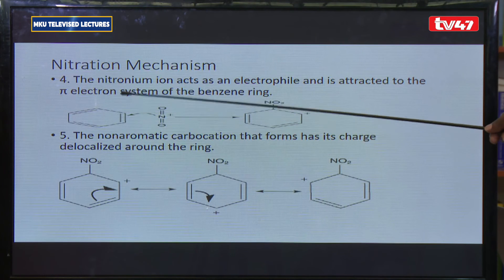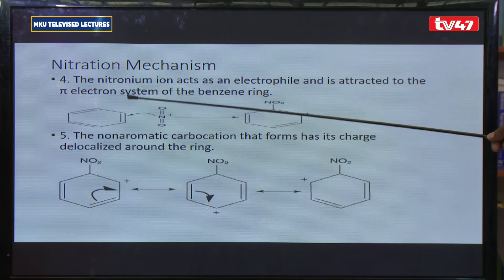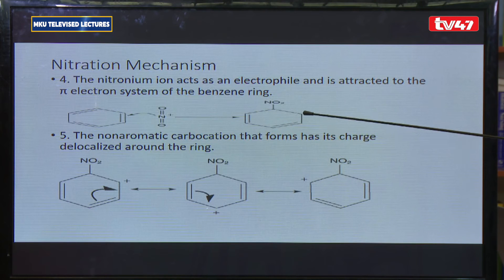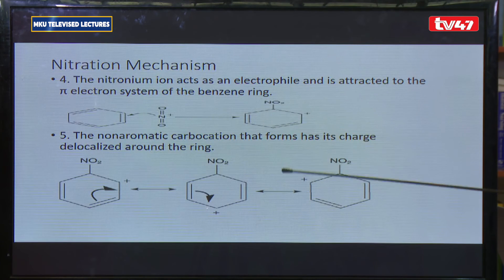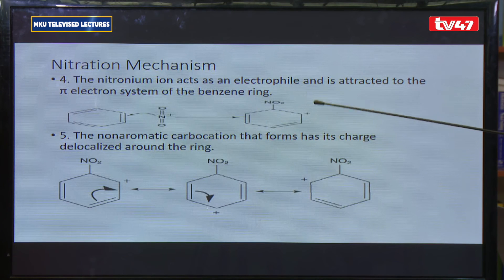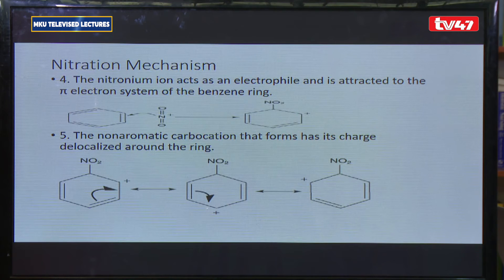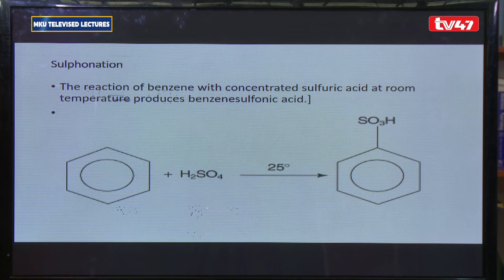The pi electrons attack the positive charge of the NO2⁺ group, forming an intermediate arenium ion. The hydrogen ion then leaves, restoring aromaticity, and you end up with nitrobenzene.